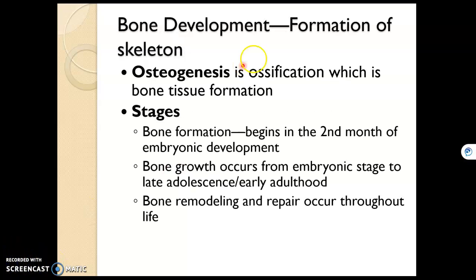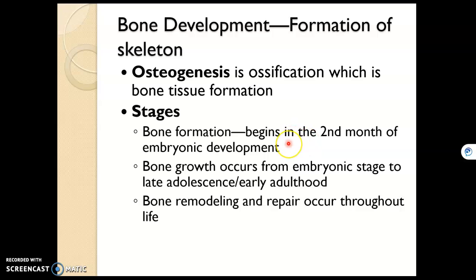The rest of this video we're going to deal with forming the skeleton. Recall that in the embryo, the skeleton is just hyaline cartilage — that hyaline cartilage gradually becomes bone. We call this osteogenesis, or ossification, which is bone tissue formation. In the embryo, at about two months, that's where ossification begins and bone starts to develop and grow.